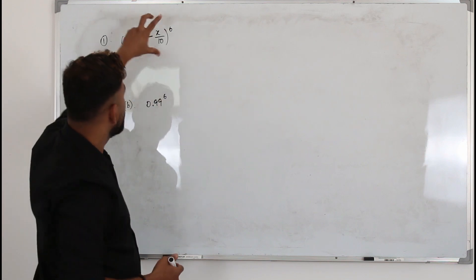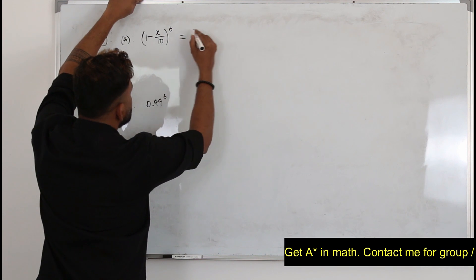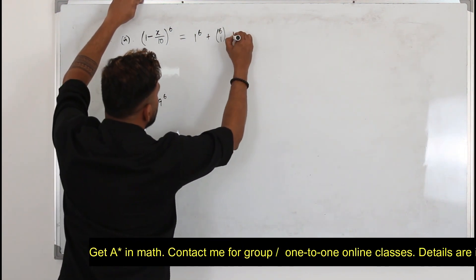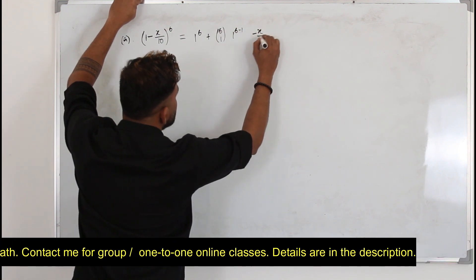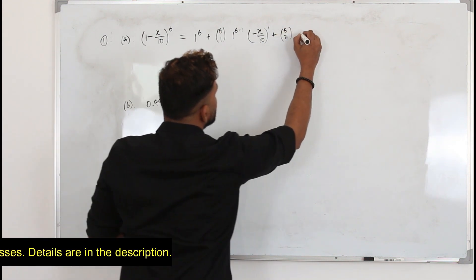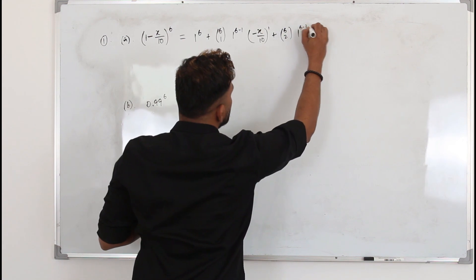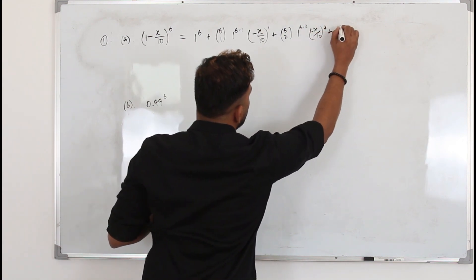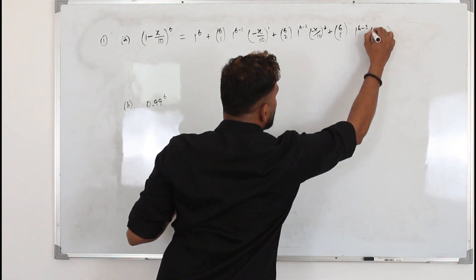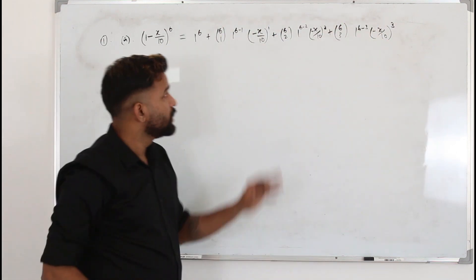For Part A, find the expansion and write the first four terms. Using the binomial expansion with a = 1 and b = −x/10, raised to the power 6: the terms are 1, then 6C1 × (−x/10), then 6C2 × (−x/10)², then 6C3 × (−x/10)³. That gives us four terms.